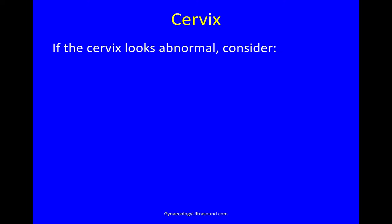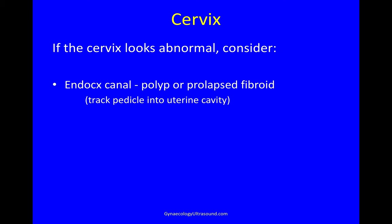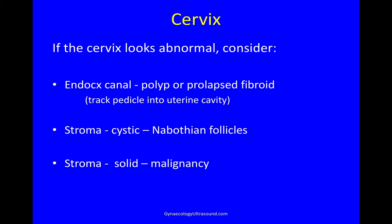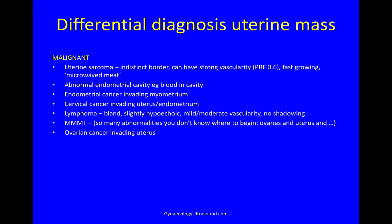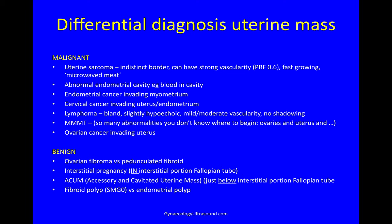If the cervix looks abnormal, think about whether the abnormality is in the canal or in the stroma. If it's in the endocervical canal it could be a polyp or a prolapsed fibroid — and if it's a prolapsed fibroid you can often track the pedicle back up into the uterine cavity. If it's a stromal abnormality: if cystic it could be nabothian follicles, but if it's a solid abnormality in the cervical stroma it could be malignant. Generally speaking there are many malignant differentials for a uterine mass, as well as benign differentials — you need to think about them and try to exclude them by looking for specific features.